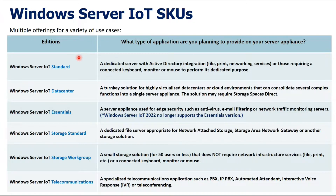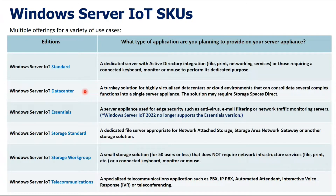There are different Windows Server IoT SKUs for different applications. The two commonly used are Windows Server IoT Standard and Windows Server IoT Datacenter. Standard is used for authenticated servers with active directory integration — for example, file, print, networking services, or those requiring a connected keyboard, monitor or mouse. Datacenter is used for turnkey solutions for highly virtualized data centers or cloud environments that can consolidate several complex functions into a single server appliance. The solution may require storage spaces direct.